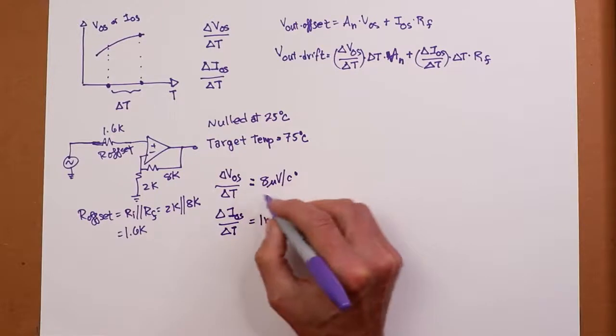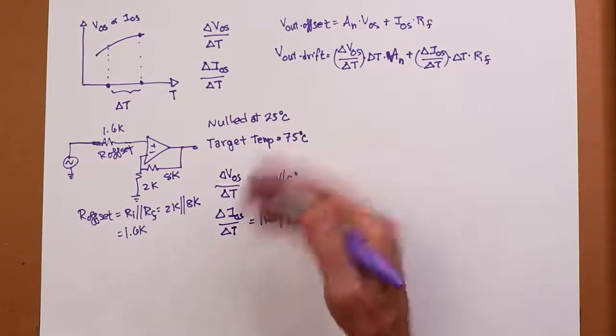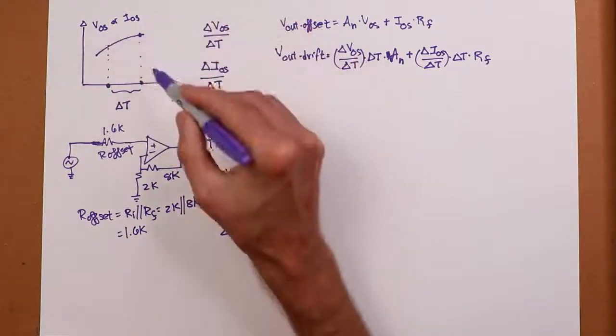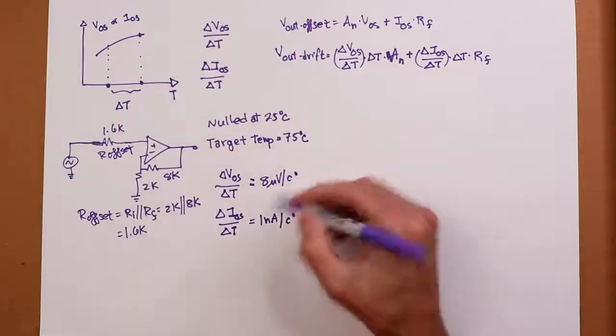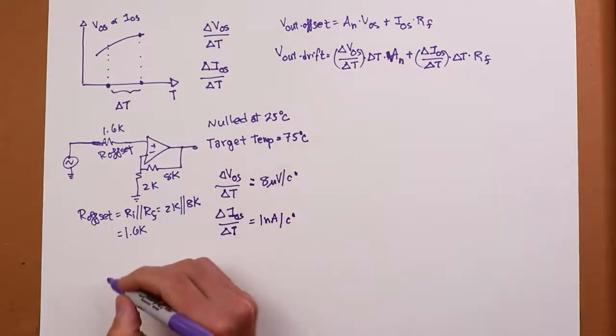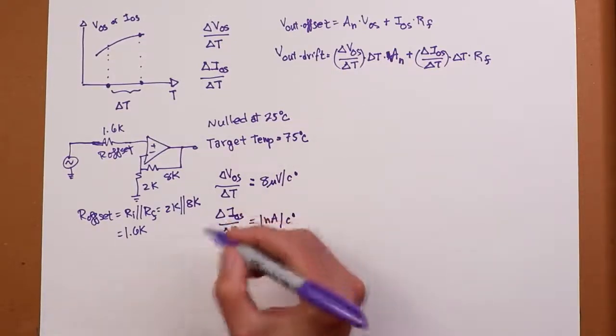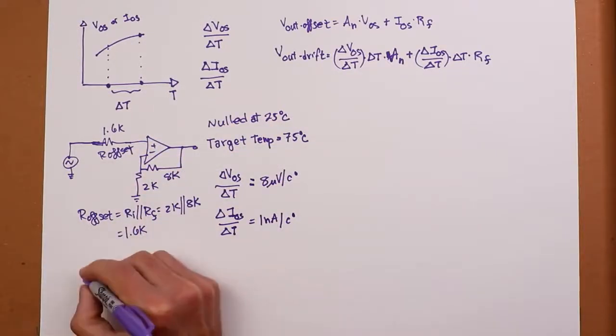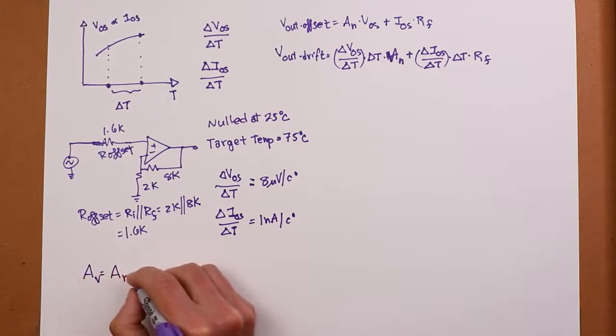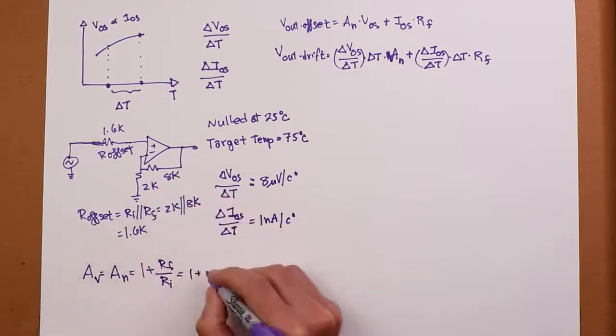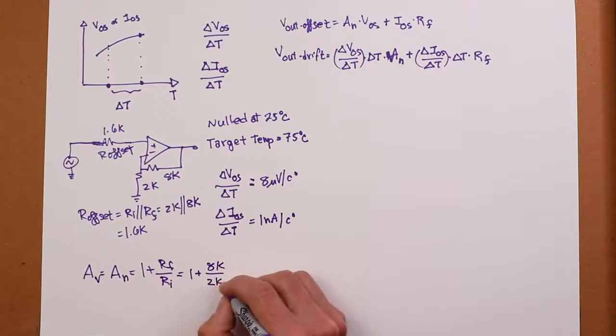Typically these are orders of magnitude smaller than the V_OS and the I_OS values, right? Because ideally this thing would be perfectly flat, but we're going to need a little curve. Okay. So what do I have in terms of noise gain? Well, the noise gain and the signal gain for this circuit are the same because it's a non-inverting amplifier, right? So that would be signal is noise is 1 plus RF over RI. So that's RF is 8K, RI is 2K. That's 5.